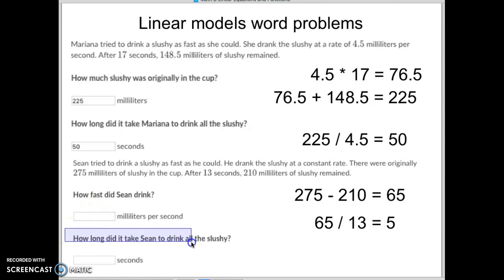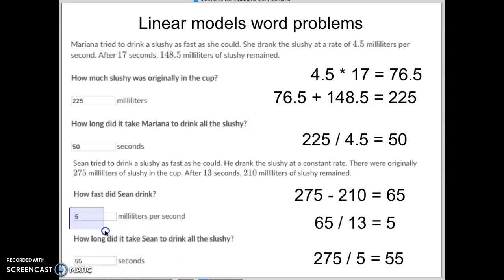At that rate, how long will it take him to drink the entire thing? There was 275 when we started. He's drinking 5 per second so we simply take and divide those two. 275 divided by 5 and it will take him 55 seconds to drink that. So again, 5 milliliters per second, 55 seconds to complete the entire slushie.